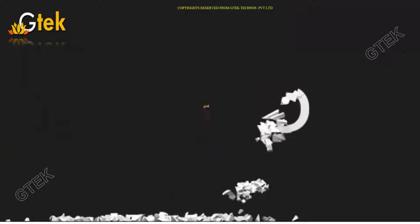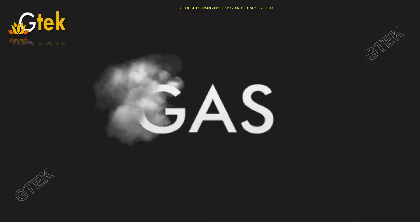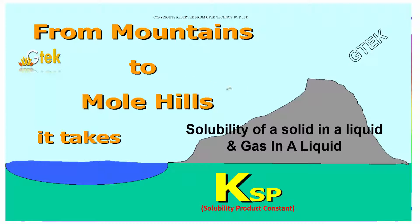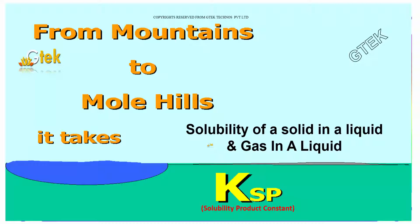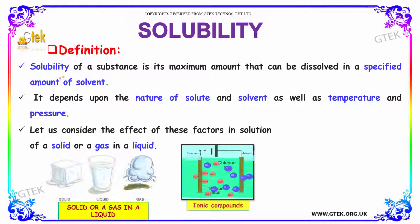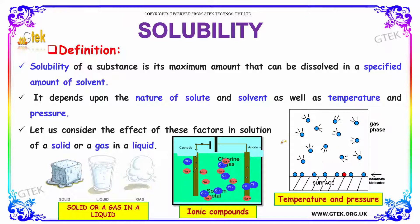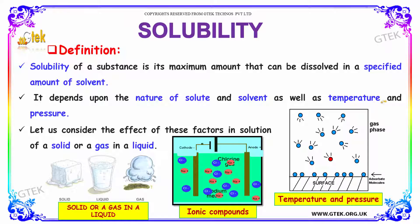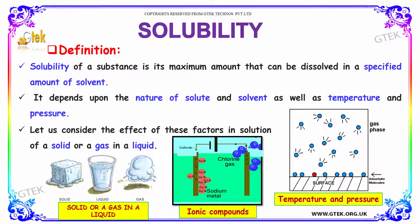Apart from solids, we are also going to discuss gas — how the solubility of a solid in a liquid and a gas in a liquid works. Solubility of a substance is its maximum amount that can be dissolved in a specific amount of solvent. It depends on the nature of the solute and solvent, as well as the temperature and pressure. Let us consider the effect of these factors on the solution of a solid or a gas in a liquid.